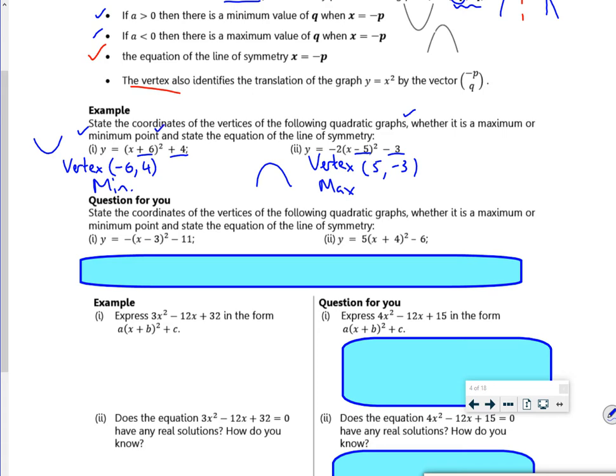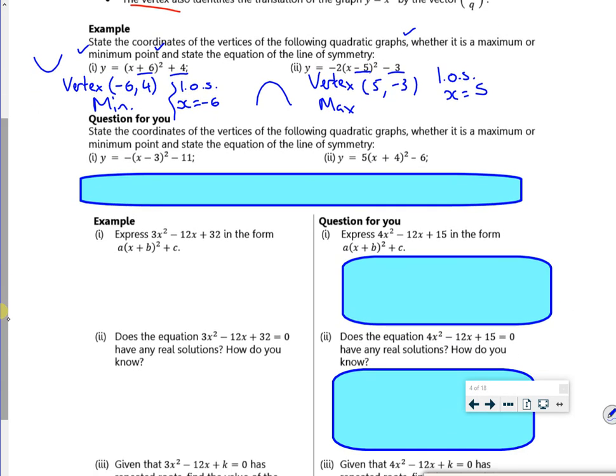And state the equation of the line of symmetry. That's the x value where the vertex is. So the line of symmetry is x = -6. The line of symmetry here, so it lines up with the vertex, is x = 5. Because the vertex is (-6, 4), it would have a mirror line x = -6. So it's a question for you to have a go at. Same idea. The vertices, the max or min, and the line of symmetry.